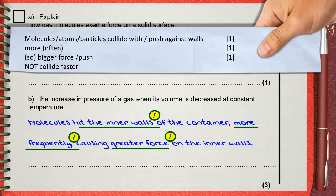But you cannot say collide faster because temperature is constant. The strength of each collision will not change, only the number of collisions will increase.